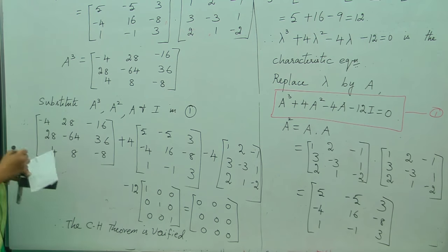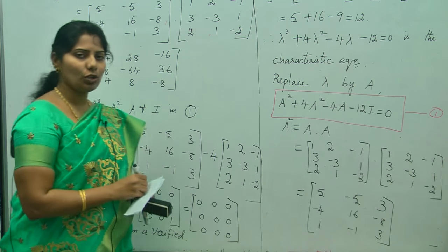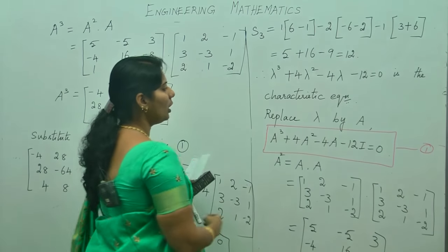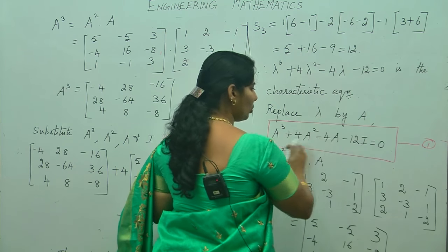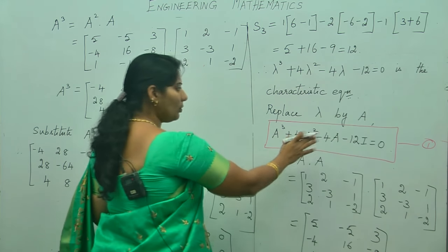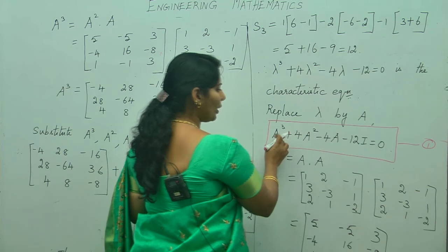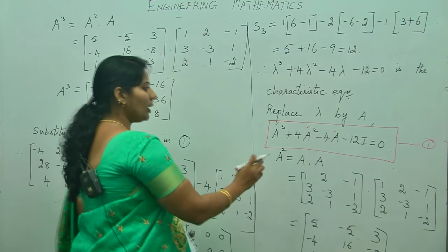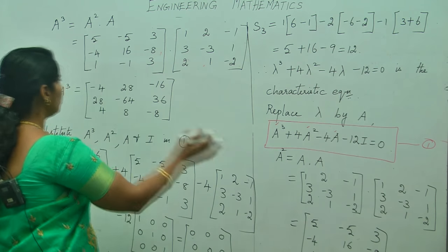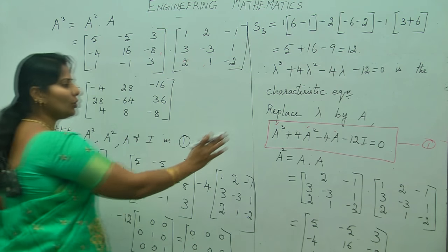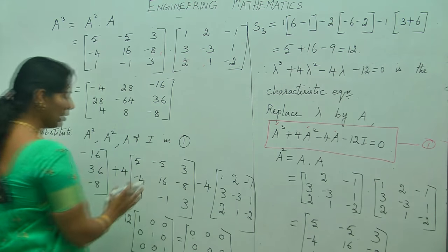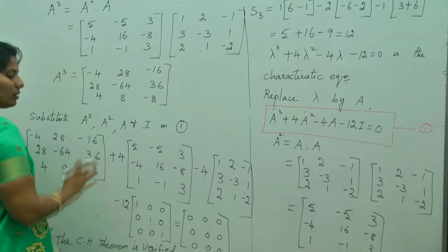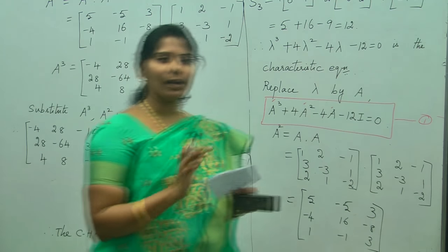So, our aim was to find the zero matrix. Once you find the characteristic equation, replace lambda by A throughout. Then find A cubed, A squared, and A by matrix multiplication, and substitute back into the characteristic equation. The final answer must be the zero matrix. This is how you verify the Cayley-Hamilton theorem.